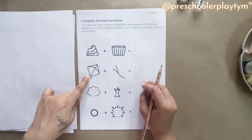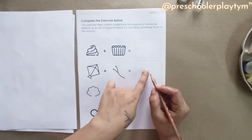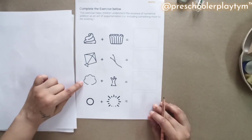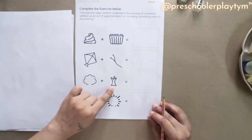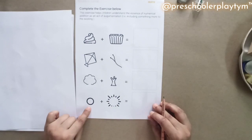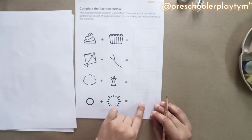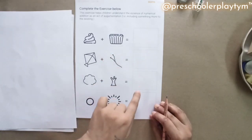When you add the kite with the string, it becomes the kite with the string. When you add the tree with the big log, it becomes a tree. When you add the circle with rays, it becomes the sun, and then they can color it.